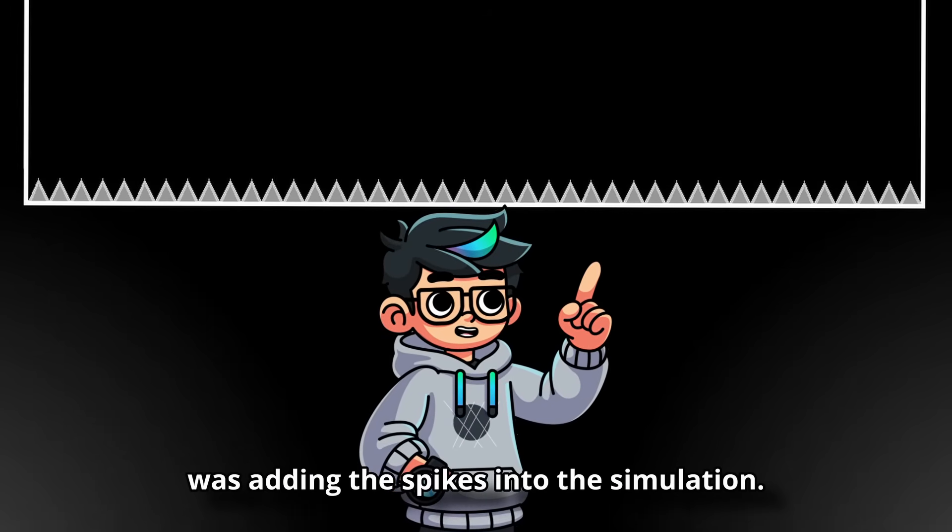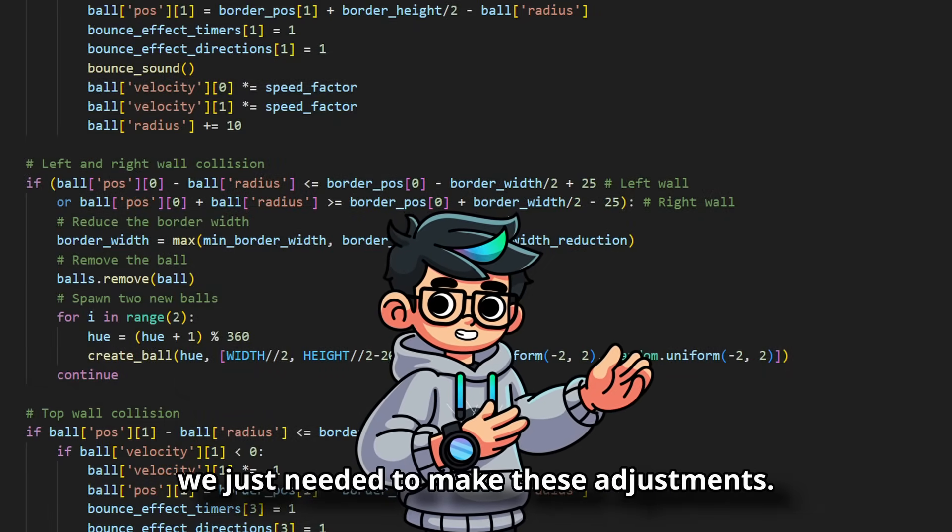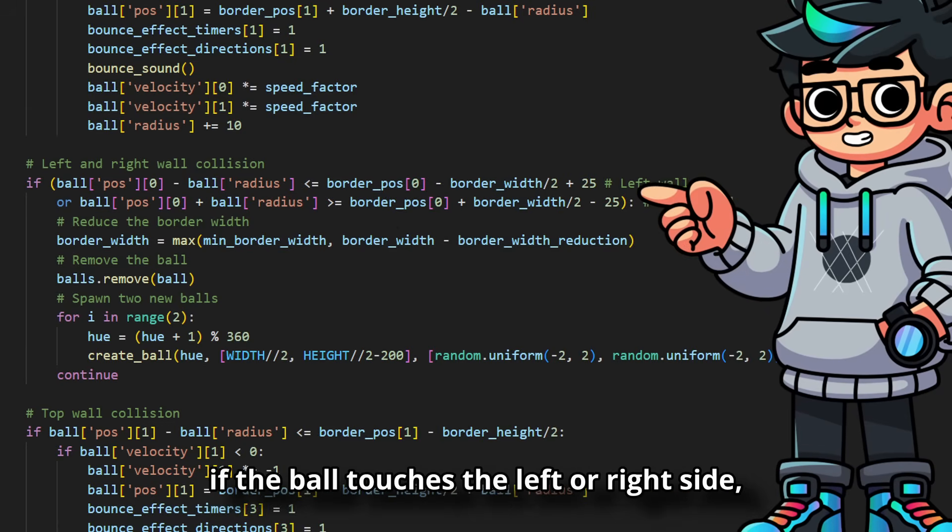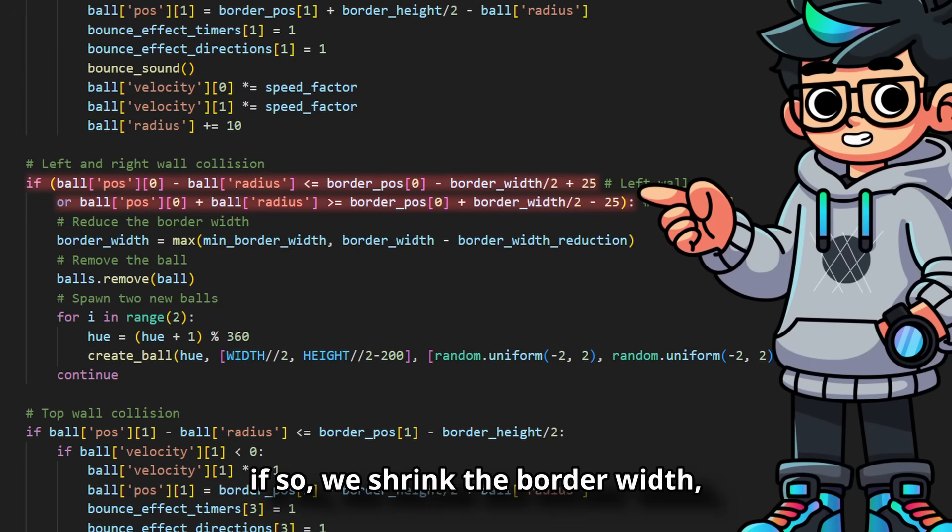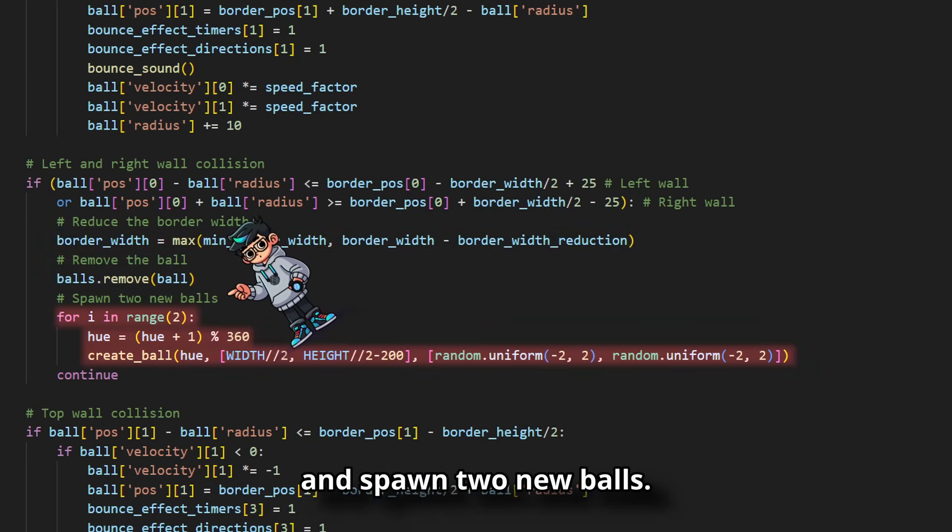The next step was adding the spikes into the simulation. After that, we just needed to make these adjustments. Basically, we check if the ball touches the left or right side. If so, we shrink the border width, remove the ball and spawn two new balls.